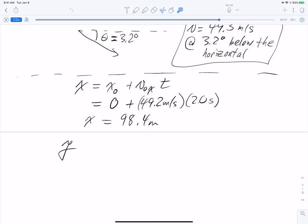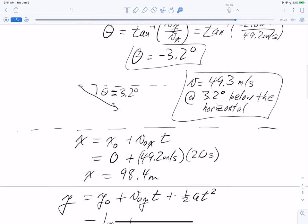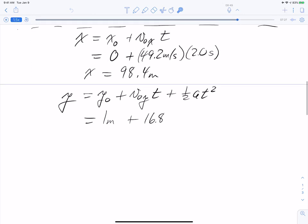Right, and then for the y position, we can say, well, we've got our equation is y naught plus v naught y times t plus 1 half a t squared. I didn't write down earlier, but we were told that the ball was at about one meter above the ground when it was hit, so we can use that as our y naught. So we've got one meter plus v naught y, which was 16.8 meters per second times 2.0 seconds plus 1 half negative 9.8 meters per second squared times 2 seconds quantity squared.